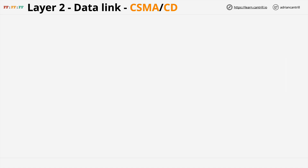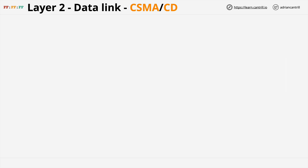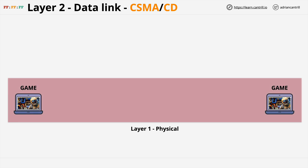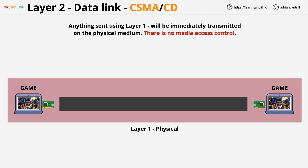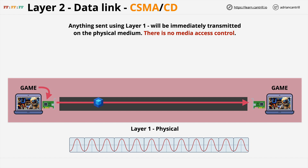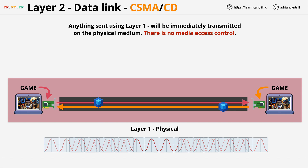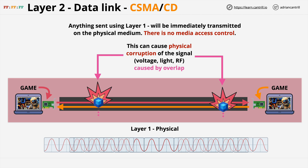As a reminder, this is the problem we have with a purely layer 1 network implementation. We have two devices running a game — a laptop on the left and a laptop on the right — connected using a single network cable, a shared physical medium. Layer 1 provides no media access control; the layer 1 software will simply transmit any data it receives onto the physical medium. If both devices transmit at the same time, the electrical signals overlap and interfere — this is known as a collision, and it corrupts both pieces of data. This is a problem of layer 1 which is solved by layer 2, which provides controlled access to the physical medium.